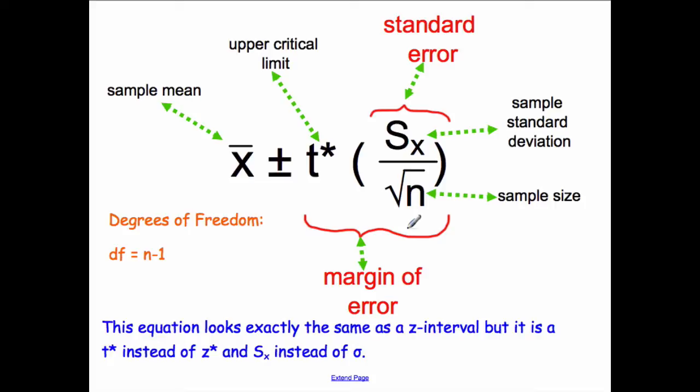Let's break down the equation. It looks very similar to a z again except that we use s of x instead of sigma x. Sample mean is x-bar. T star is new and I'll explain how to find t star. S of x is our sample standard deviation divided by the square root of n. Again, this part right here, the s of x over the square root of n, is your standard error. The margin of error is the plus or minus when you multiply all this together.